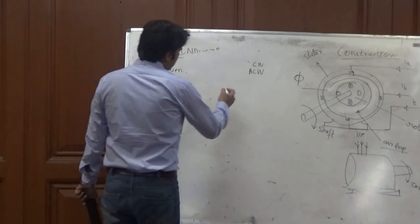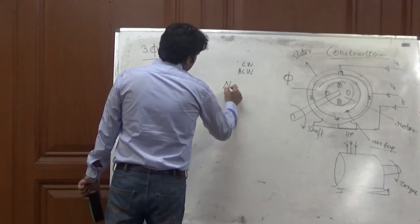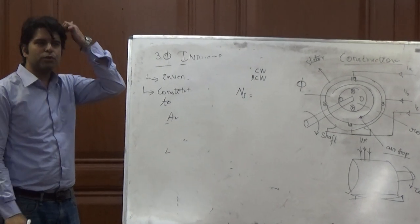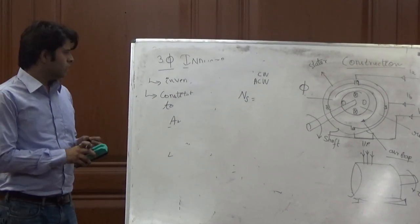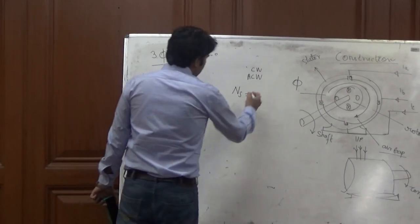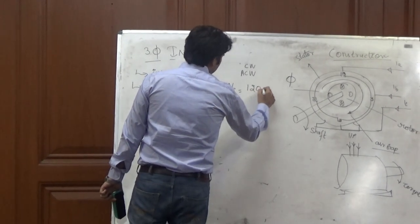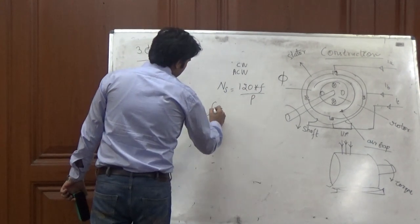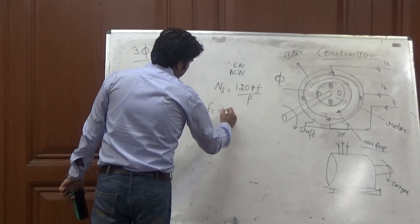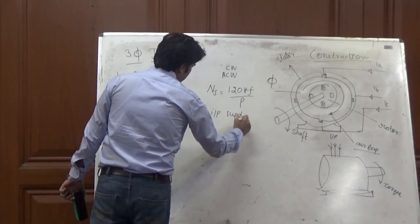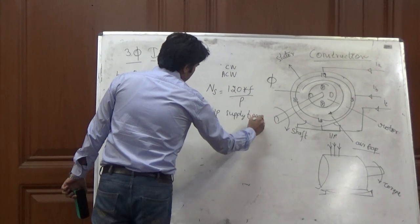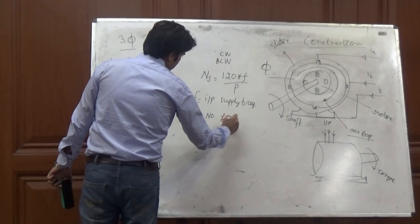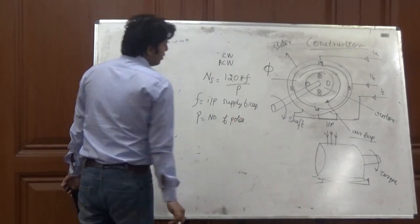And the speed of the rotation is given by the synchronous speed. So we can say that the speed with which the flux is rotating is known as the synchronous speed, the formula of which is 120 into F by P, where F is the input supply frequency, while P are the number of poles in the rotor.